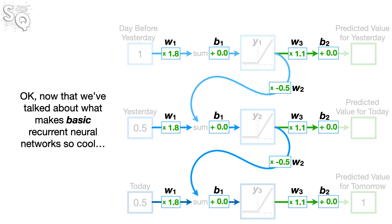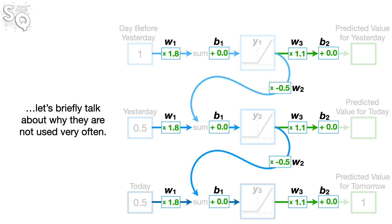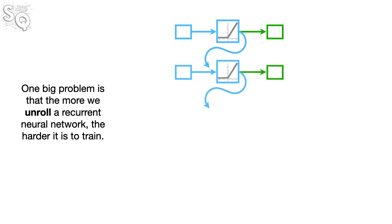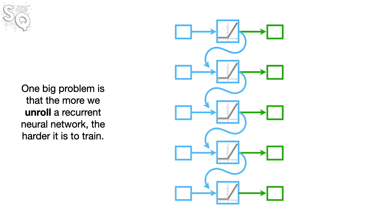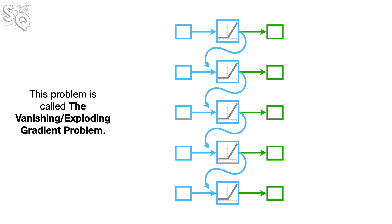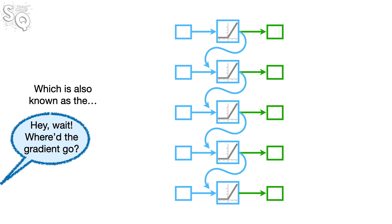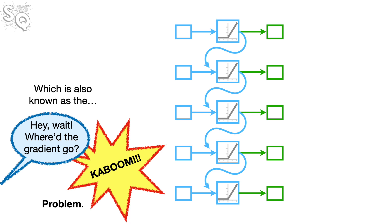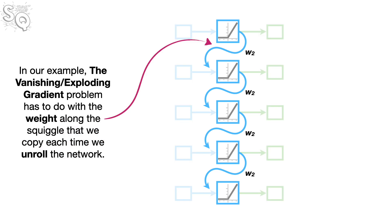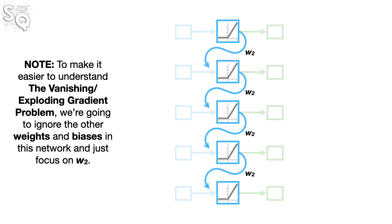Okay, now that we've talked about what makes basic recurrent networks so cool, let's briefly talk about why they are not used very often. One big problem is that the more we unroll a recurrent neural network, the harder it is to train. This problem is called the vanishing-slash-exploding-gradient problem, which is also known as the, hey wait, where'd the gradient go, kaboom, problem. In our example, the vanishing-slash-exploding-gradient problem has to do with the weight along the squiggle that we copy each time we unroll the network. Note, to make it easier to understand the vanishing-slash-exploding-gradient problem, we're going to ignore the other weights and biases in this network and just focus on W sub 2.